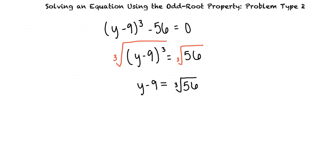Now we have y minus 9 equals the cube root of 56. When we add 9 to both sides, we isolate y. Can the cube root of 56 be simplified? That's a good question. Are there any factors of 56 that are also perfect cubes?